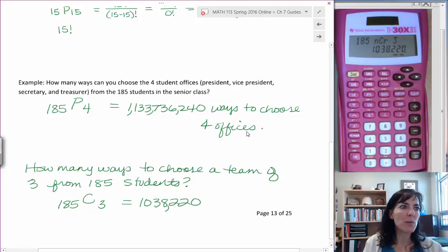Put in my commas: one million thirty-eight thousand two hundred twenty ways to choose.